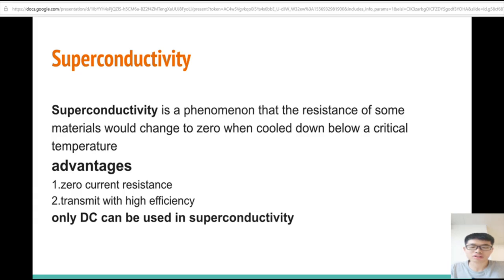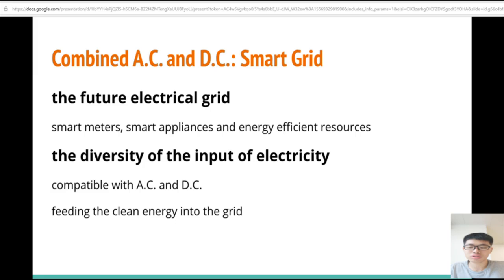Finally, the smart grid system will be used in electrical transmission. Smart grid can monitor the use of electricity and make adjustments based on it. It will reduce the loss of electricity power. Also, it will have diverse input of power and promote the development of clean energy, such as solar and wind power. This can be done by the compatibility of AC and DC. In conclusion, both AC and DC can be used in the future and the smart grid will combine them to reach the best effect. Thank you very much.